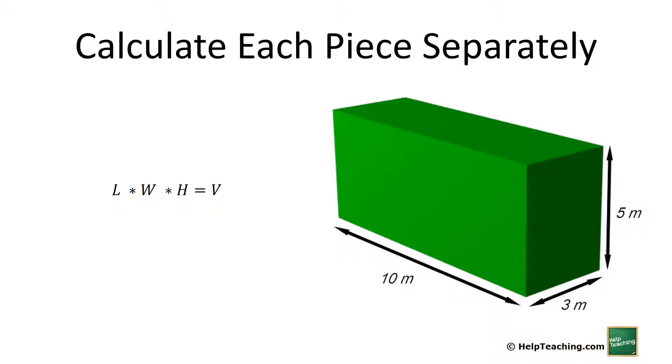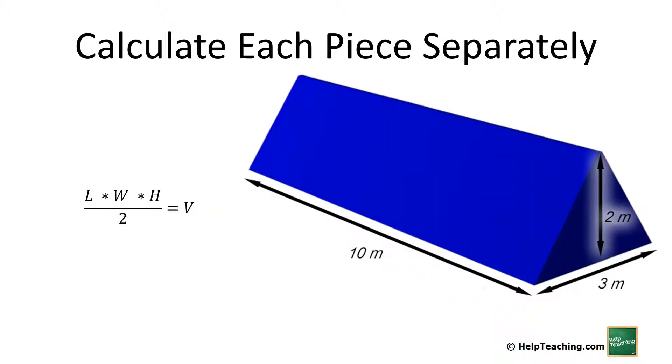The roof part is a triangular prism, which is the same as a rectangular prism—length times width times height—except we divide by 2. So we just have 10 times 3 times 2, divided by 2, which gives us 30 cubic meters.